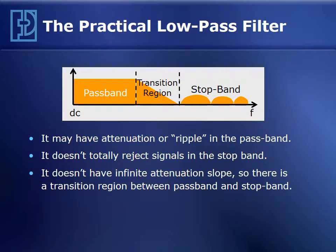The practical low-pass filter introduces a transition region, and that's a region between the passband and the stopband where the filter progresses in increasing attenuation, or decreasing gain, to the stopband. All practical filters require a transition region in order to mathematically realize the filter. The filter also may not be perfectly flat in the passband — it may have some ripple — and in the stopband it'll have finite stopband attenuation, with a finite amount of gain.